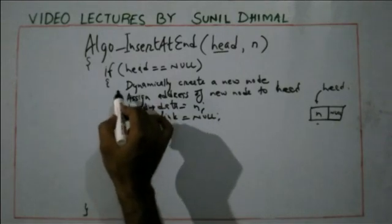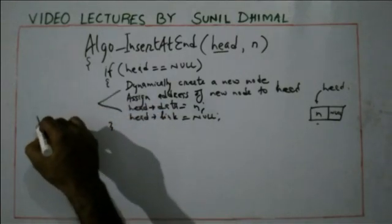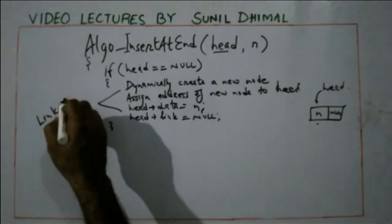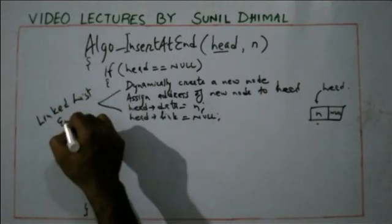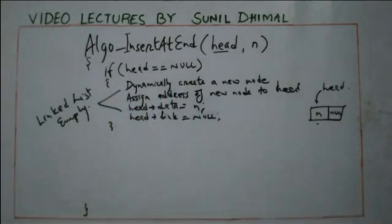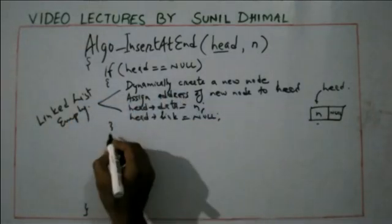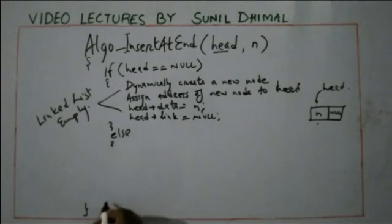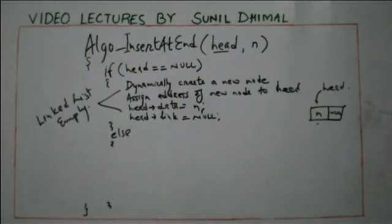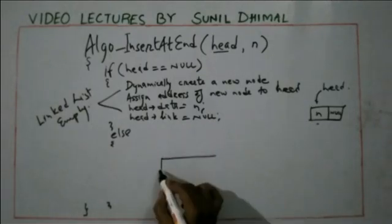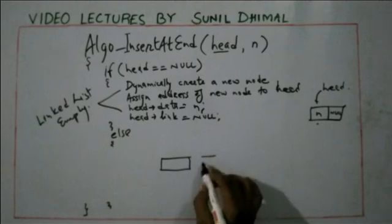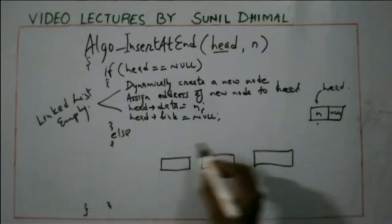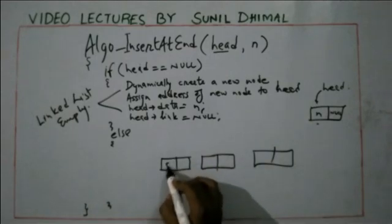Whenever the linked list is empty, you do the steps above. Now if the list is not empty — you are given a list with at least one or more elements — and you are given the head pointing to the first node. Let's take an example where there are three elements, say 5, 2, and 6, and this last node points to null. This is head.